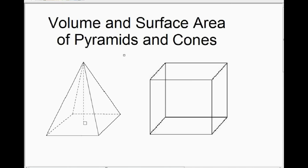The next thing we're going to talk about in our measurement unit is the volume and surface area of pyramids and cones. The first one we're going to talk about is the volume of a pyramid. Before we talk about the volume of a pyramid, we're going to quickly review how we get the volume of a cube.